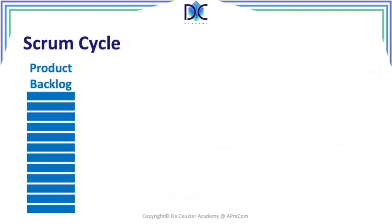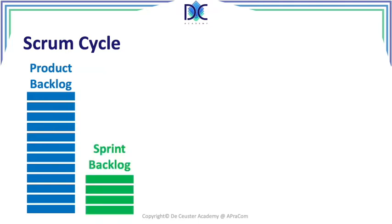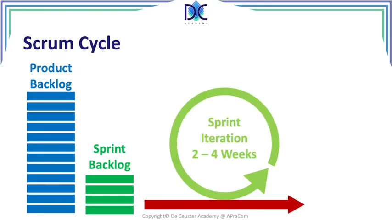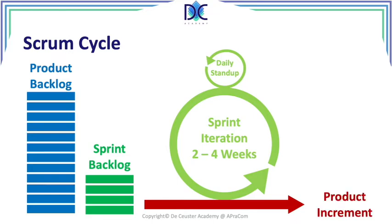When we look at the Scrum cycle, we have the product backlog — the elements we think we will need to create for the project. At the beginning of every sprint, we put the elements we are going to complete into what we call the sprint backlog — the work we are planning through the sprint. Sprint iterations are typically two to four weeks. We have daily stand-ups to track progress, and finally we have a product increment, a sprint review, and retrospectives.